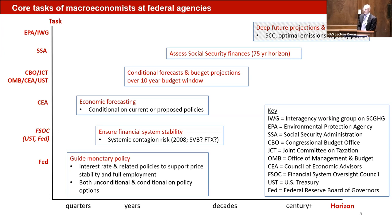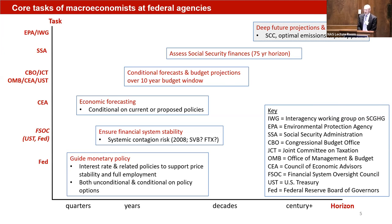There's plain old economic forecasting. CEA does a lot of economic forecasting — either a best-guess baseline of how the economy will look, or conditional forecasting where you say, suppose we implement this policy, what would that actually do? There's the 10-year budget window for CBO, the Joint Committee on Taxation on the congressional side, and OMB, CEA, and U.S. Treasury — the Troika — on the executive side. Our next session, right after my talk, is going to be representatives from that crew using a couple of different models and talking about climate in those models.